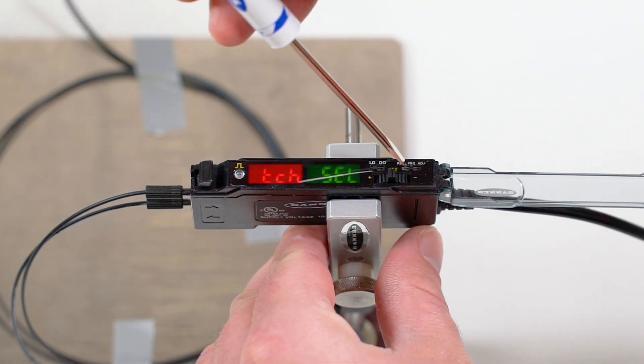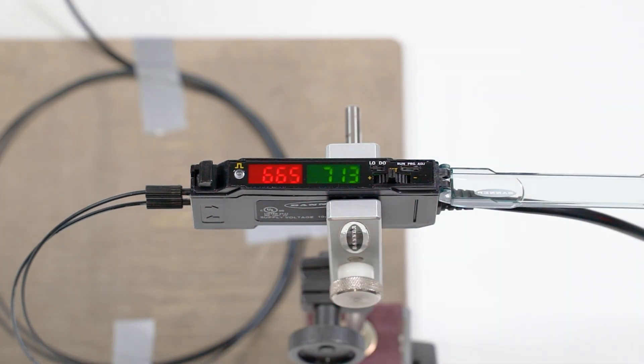To teach the amplifier, move the mode switch to ADJ to access the adjust mode. The display will show the current excess gain rating in red and the current switching threshold in green.